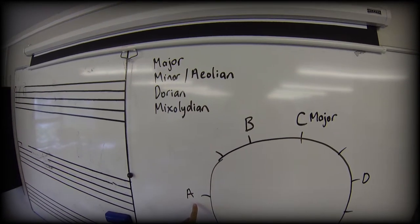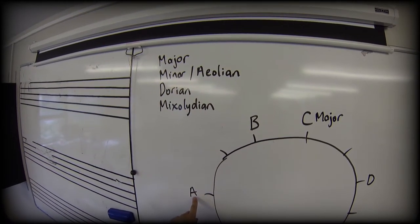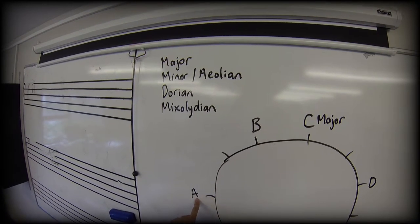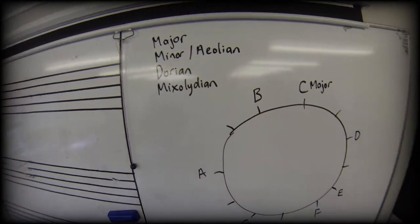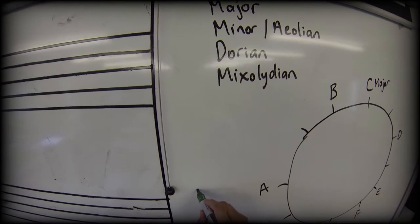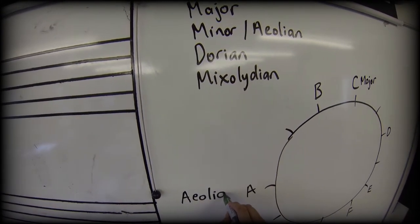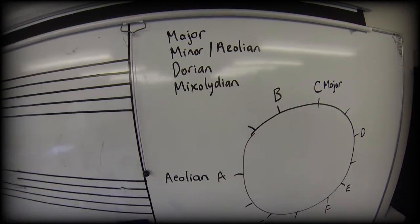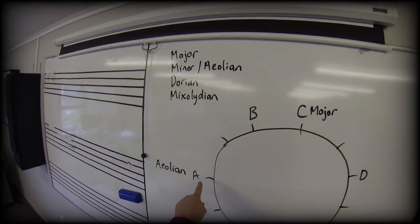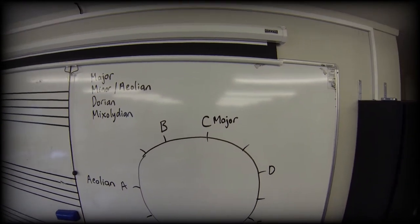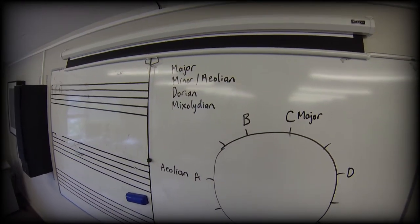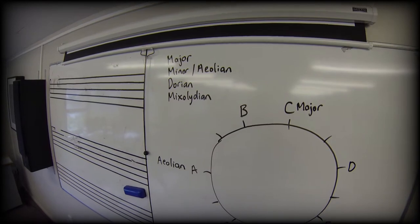Now what's useful about this is that aeolian starts with A, so let's remember that if we start this circle of notes from A we make an aeolian mode, or a minor - a natural minor is what we call it.